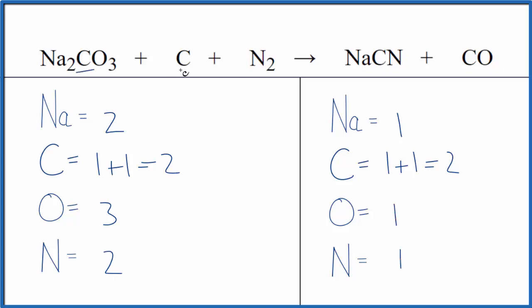So since we have a carbon here and here and then the products here and here, let's balance the carbons last. That might be a little bit easier. So how about sodium? We have two here and one here. Let's put a two in front of the sodium cyanide. One times two. That'll balance the sodium atoms.